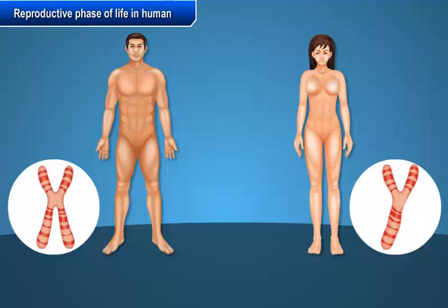In our country, the legal age for marriage is 18 years for girls and 21 years for boys. This is because teenage mothers are not prepared mentally or physically for motherhood. Early marriage and motherhood cause health problems in both the mother and the child.